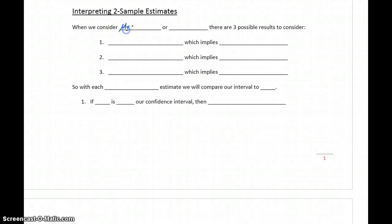When we consider our estimates for either μ₁ minus μ₂ or M₁ minus M₂, the difference of our population means or the difference of our population medians, there are three possible outcomes to consider. We're going to write up each of these interpretations just looking at μ₁ minus μ₂, but it's interchangeable with M₁ and M₂.